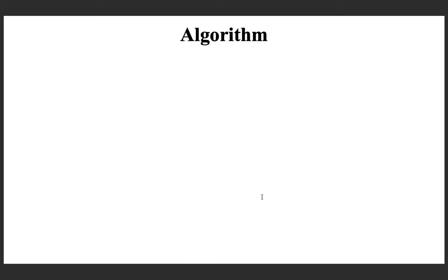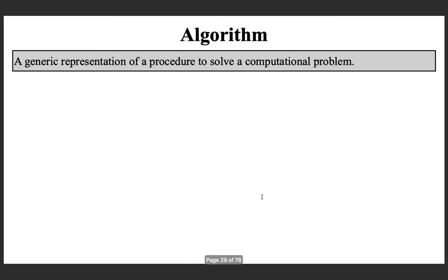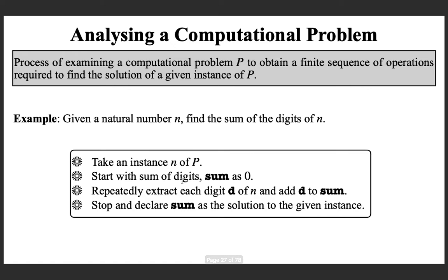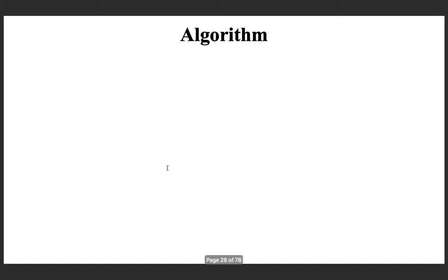Now we can see what is an algorithm. You can define it as a generic representation of a procedure to solve a computational problem. A general representation of this procedure as a finite sequence of steps is what is called an algorithm.